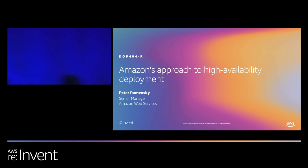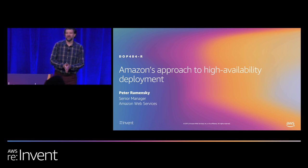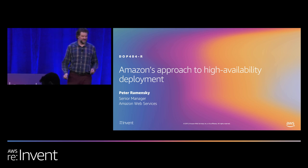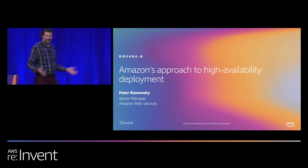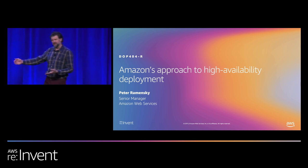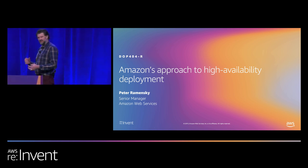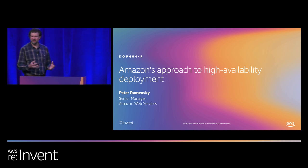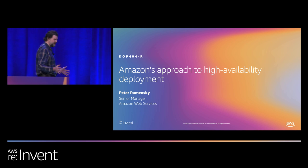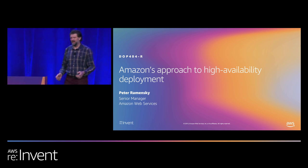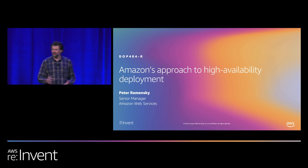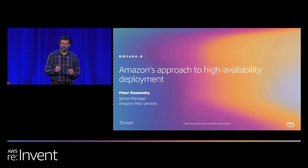Hello everybody and welcome to today's session on Amazon's approach to high availability deployment. My name is Peter Remensky, I'm a senior manager here at AWS, and I spend a lot of my time thinking about how we do deployments and how to do them safely. I work in the developer tool space, working directly with many Amazon service teams to figure out how they can make changes to their services without causing customer impact. Today I'm going to be talking about our approach to eliminating deployment failures — how we identify the most important safety practices, roll those practices out across a large engineering organization, and build them directly into our tools.